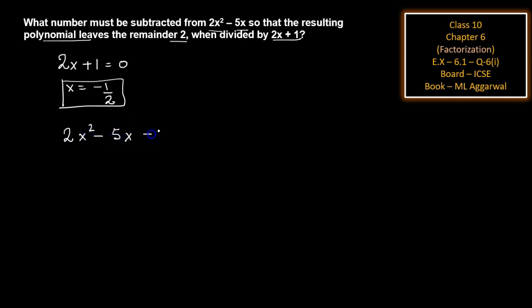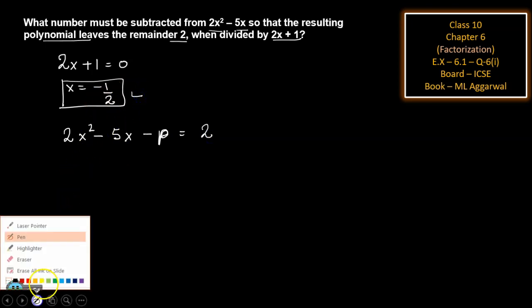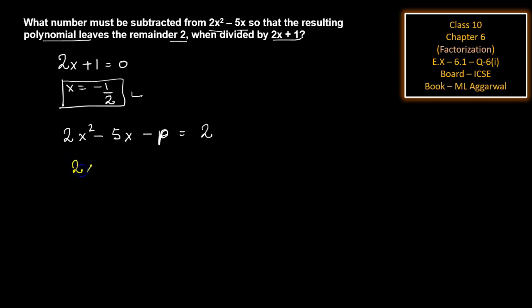Let the number to be subtracted be p. The remainder will be 2. Now putting x = -1/2 into this equation, we get: 2(-1/2) - 5(-1/2) - p = 2.